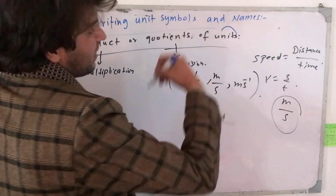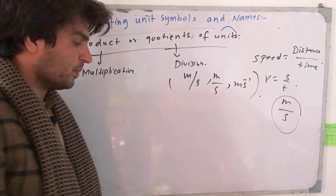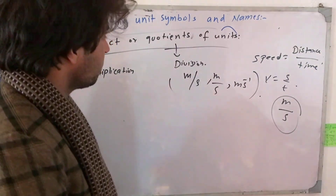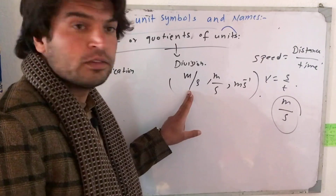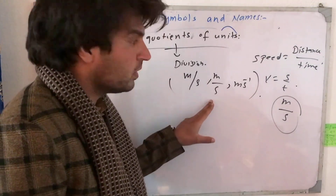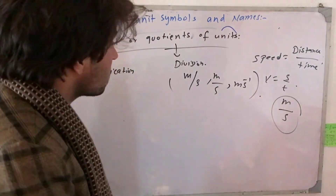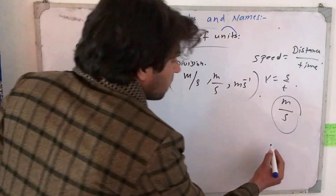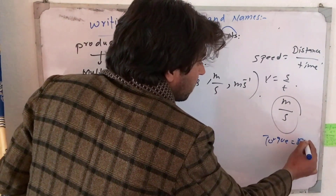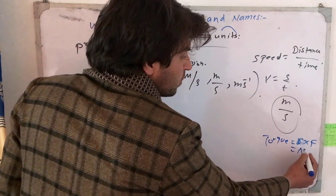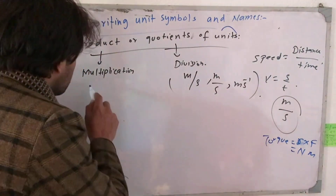Meter per second — using an oblique or stroke (/) means meter divided by second, and the inverse notation gives meter second to the power of minus 1. For force multiplied by radius — force unit is Newton and radius unit is meter — so two units in a product get a space or dot between them, giving Newton-meter.